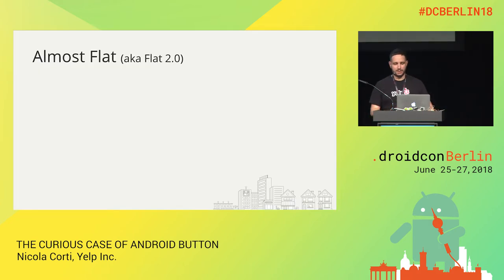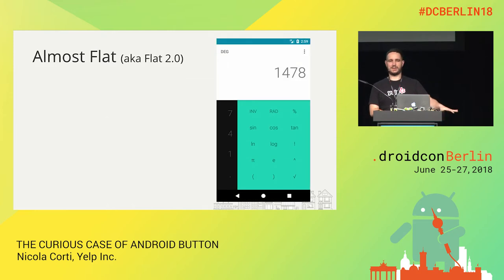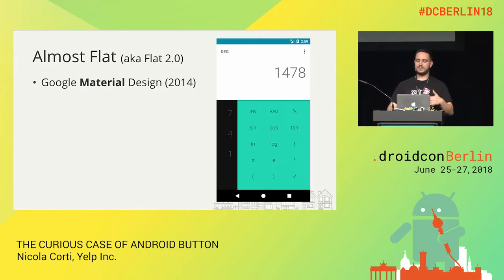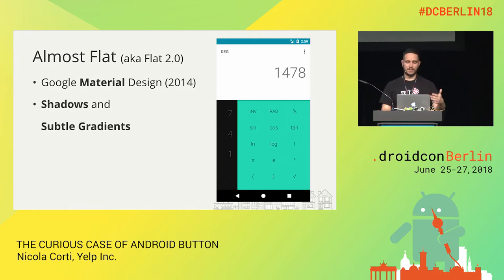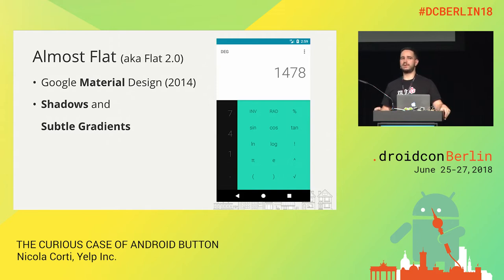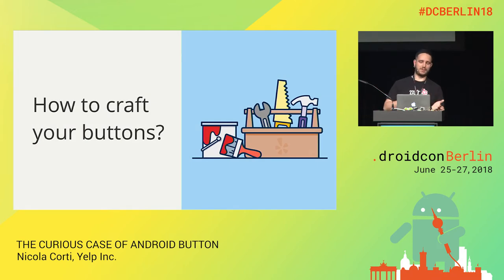Then we did another iteration. The current status of this kind of design is called Almost Flat, or Flat 2.0. This was introduced by Google with Material Design in 2014. The idea is to use a flat UI but add some non-flat components — for example, shadows and subtle gradients. With a shadow, I can inform the user which areas of the screen I want them to interact with. All of these principles will end up in the way you craft your buttons.